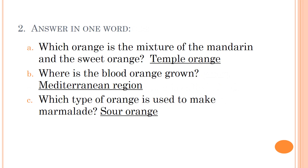Next exercise: answer in one word. A) Which orange is the mixture of the mandarin and the sweet orange? Answer: temple orange. B) Where is the blood orange grown? Answer: Mediterranean region. C) Which type of orange is used to make marmalade? Answer: sour orange.